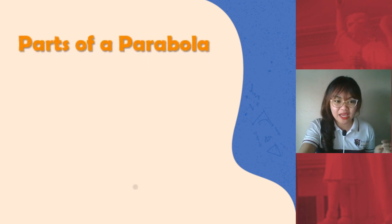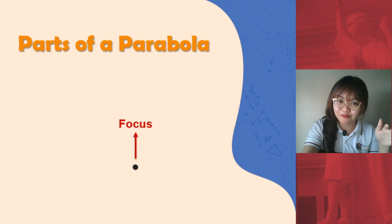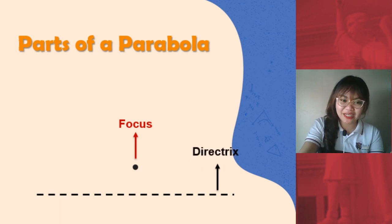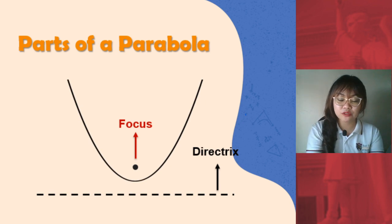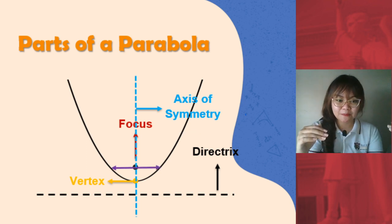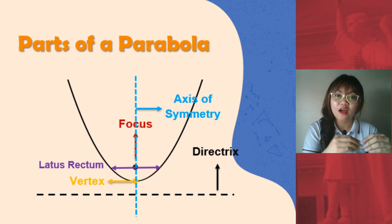So let's review. We begin with a fixed point called focus. Then we have a fixed line. And what do we call this fixed line? Directrix. Very good. We are able to construct the parabola using those two materials or two figures. And then what do we call this? This lowest point or the midpoint between focus and directrix. The vertex. Correct. After that, we divide the parabola into two symmetrical portions. What do we call this one now? The axis of symmetry. Next, measuring along the focus, what do we call this portion? This is now called the latus rectum or focal diameter. So these are the parts of a parabola.